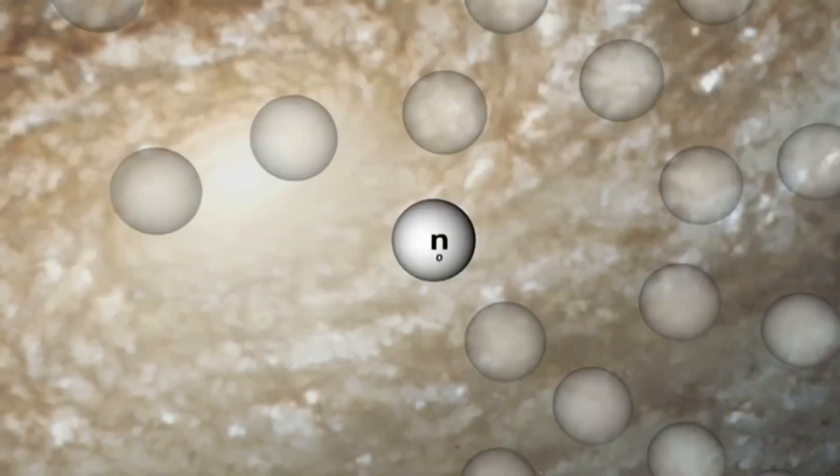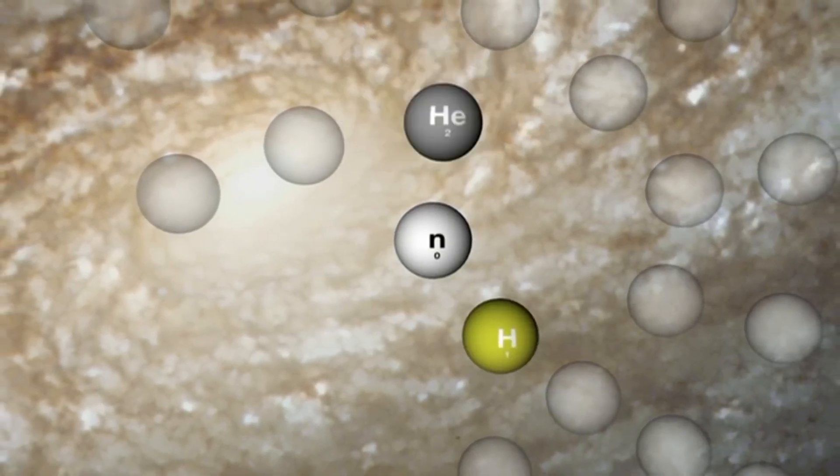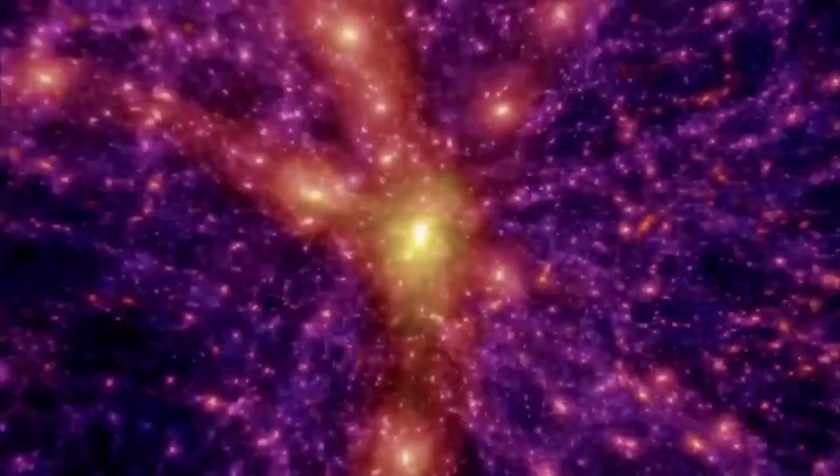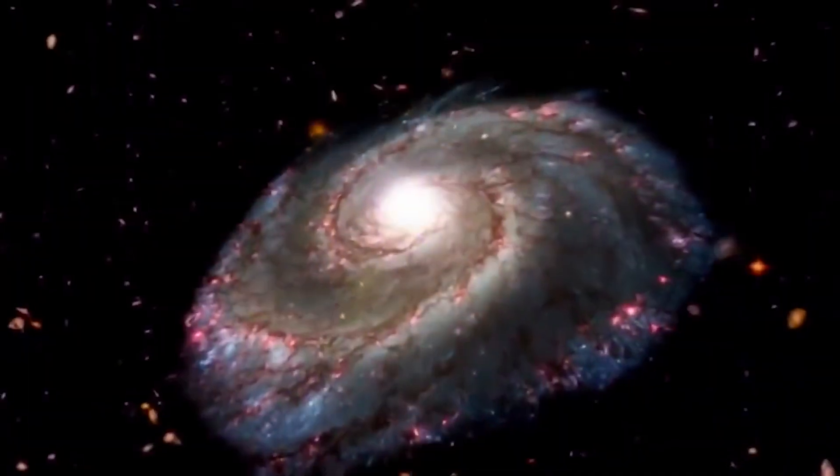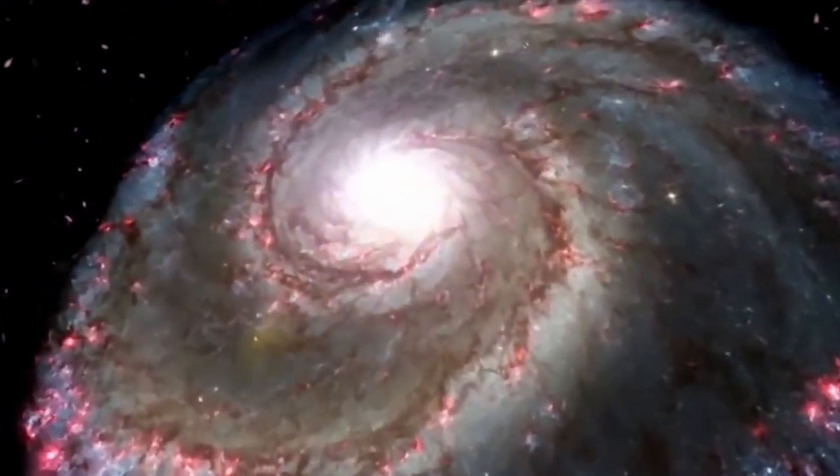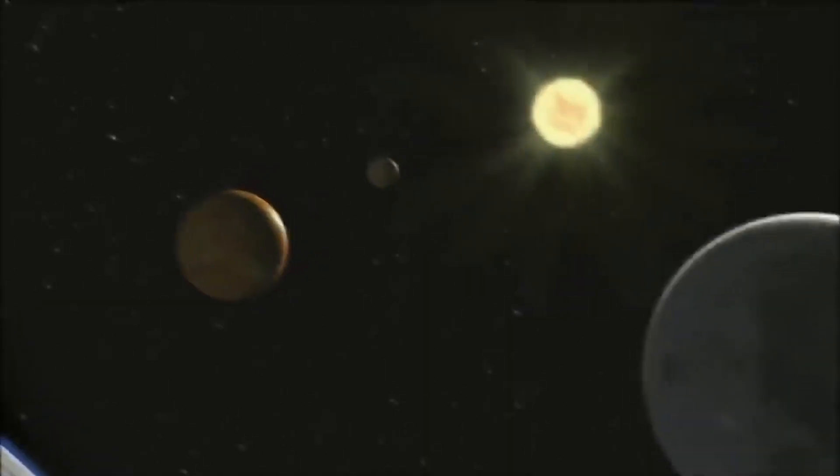Next, we find certain light elements, like hydrogen and helium, in specific amounts scattered around, which tells us they came from an early, very hot, and dense state, even before stars started to shine. And lastly, the universe looks like a cosmic web, with galaxies and voids showing us it's been getting more complex and structured over time.